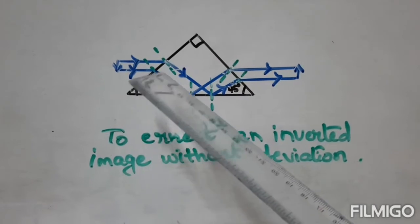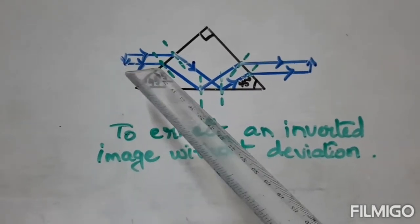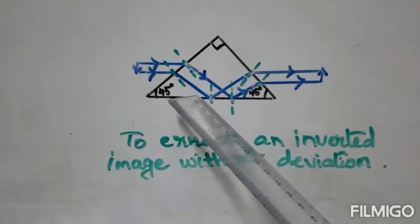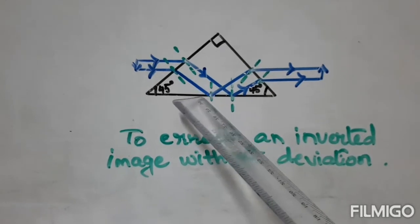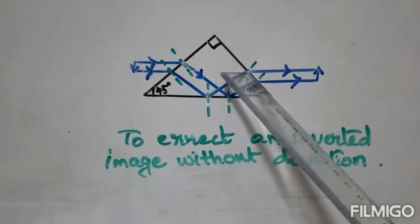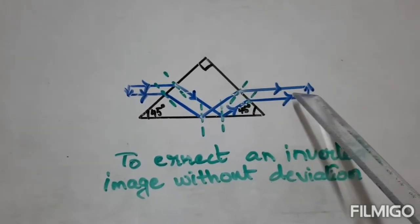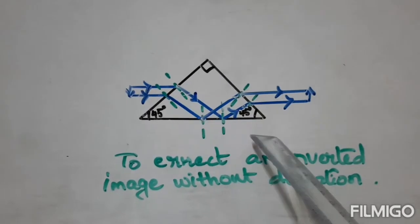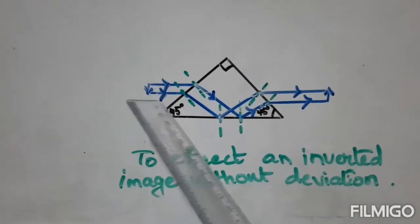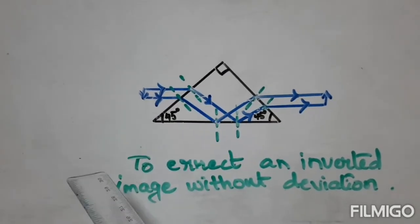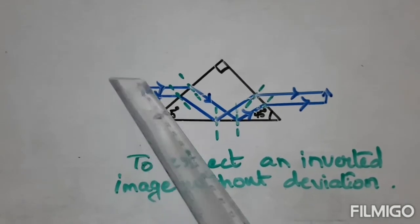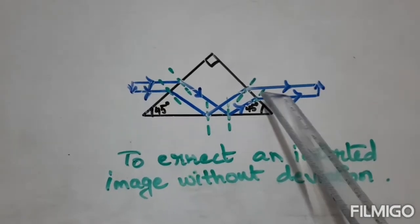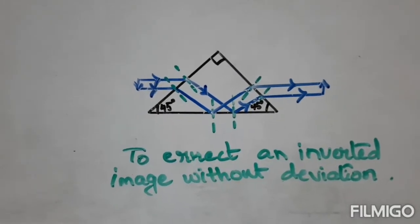In this case, two parallel rays of light are incident on the first surface. The light undergoes refraction, then total internal reflection, and then refraction again. This particular action of a right isosceles prism is used to erect an inverted image without deviation in a slide projector. Here we can see the inverted object which becomes erect. Twice refraction and once total internal reflection takes place.